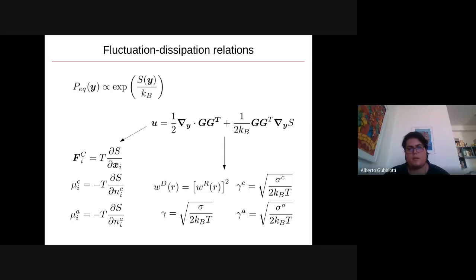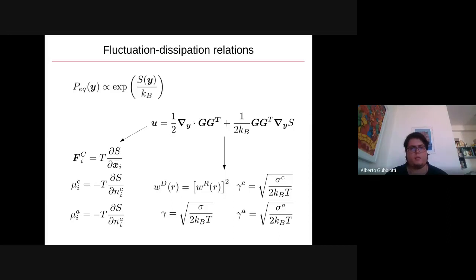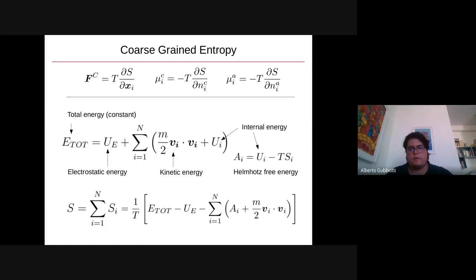Once substituted back into the equations, we obtain, on one hand, some relations between the dissipative terms and the stochastic terms — the fluctuation-dissipation relations, two of which are the same as in standard DPD and the other two arising from the new variables. On the other hand, we obtain a relation between the conservative force and the chemical potentials and the coarse-grained entropy, such that the full set of equations is completely specified once the coarse-grained entropy is given. So the problem of modeling the system reduces to the problem of modeling this coarse-grained entropy function.